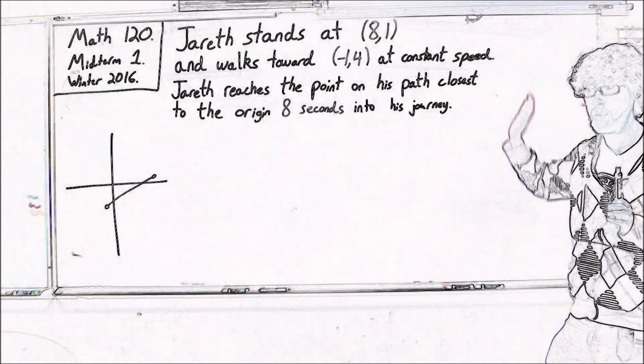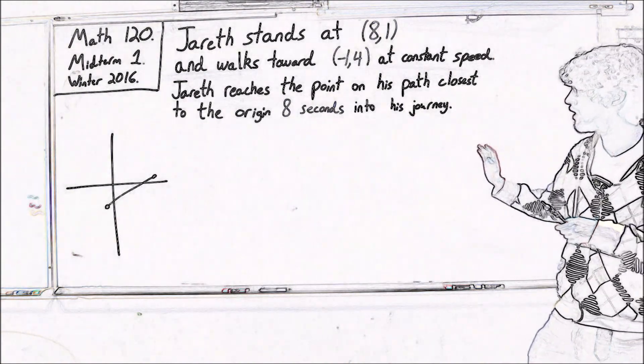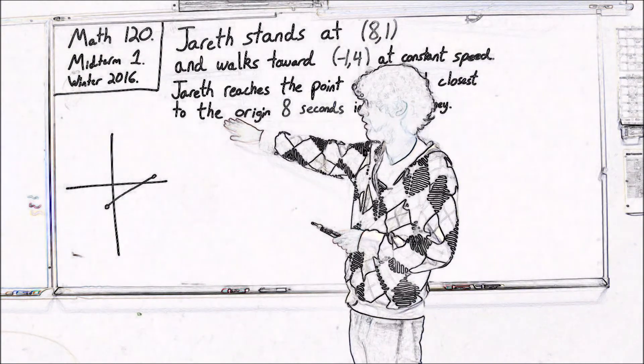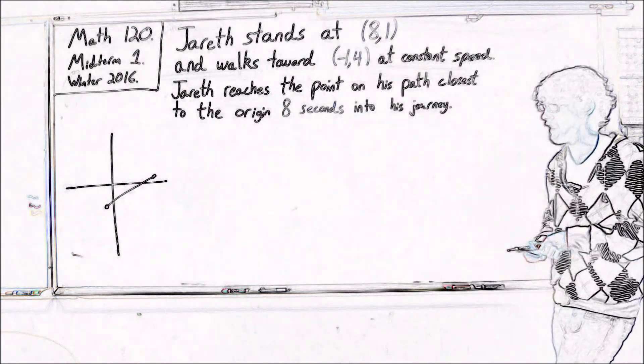Well, we know it's constant speed, which is nice. But we know that he reaches the point on his path closest to the origin. He reaches that point 8 seconds in.